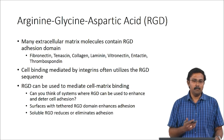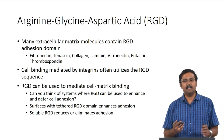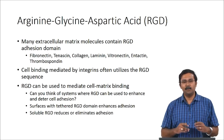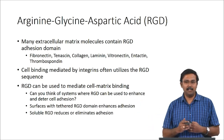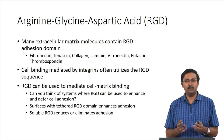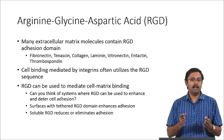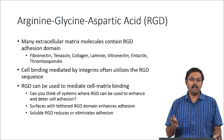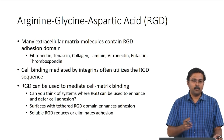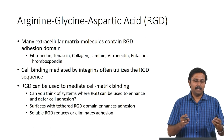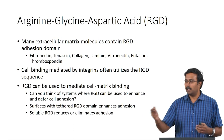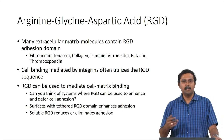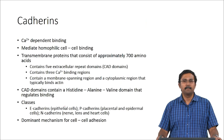Cell binding through the RGD domain is often mediated through integrins, and this was one of the early peptides used for improving cell adhesion. When modifying material surfaces, people attach RGD domains or incorporate them as part of the matrix to improve cell adhesion. RGD can also be used to reduce cell adhesion — if you use RGD as a soluble component in the media, it prevents adhesion of cells that express integrin receptors, which could be useful for cell separation applications.